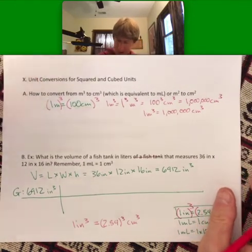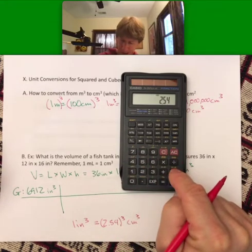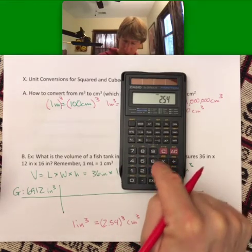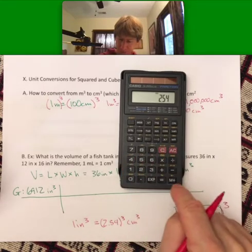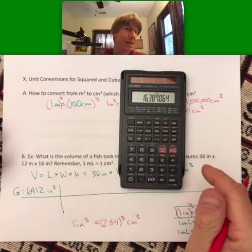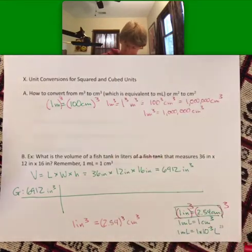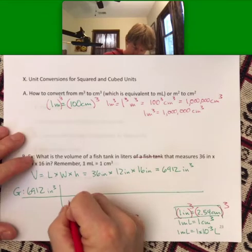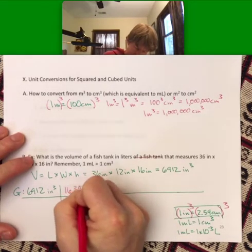So 2.54 times 2.54 times 2.54 equals 16.387. We don't need that many sig figs but let's keep a couple extra. So one inch cubed equals 16.387 centimeters cubed.